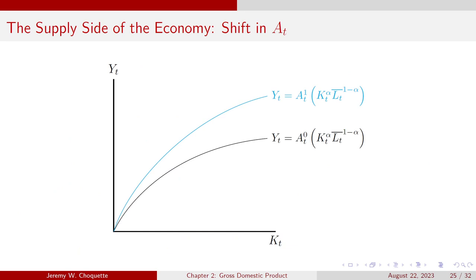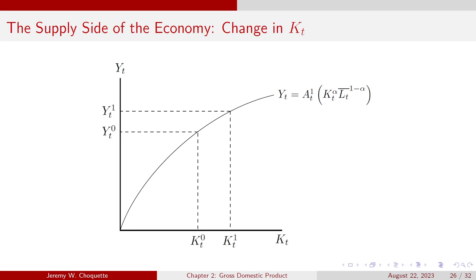So if we change A, we move to a new curve entirely. A shifts the production function — depending on whether it's a positive or negative shock to TFP — while changes in K or L just move us to a new point on the same production curve. If we increase the capital stock, we'll increase output, but we stay on the existing curve.